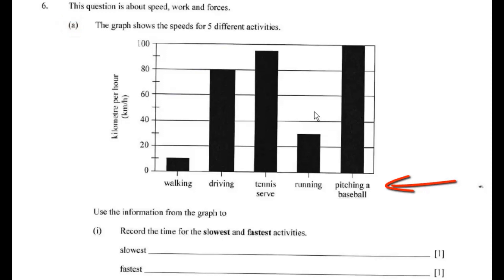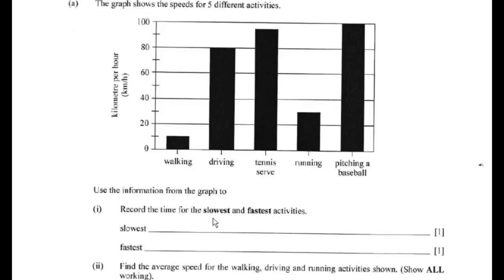You've got five activities: walking, driving, tennis, running, and pitching a baseball. The first thing you need to do on 6a1 is record the time for the slowest and the fastest activities — it's one point for each one. If you look at the graph, walking is on the far left and shows ten kilometres an hour. All the way on the other side, pitching a baseball is the fastest at one hundred kilometres an hour.